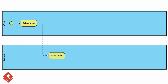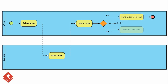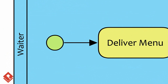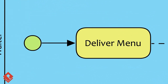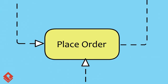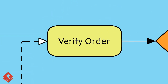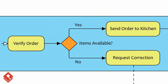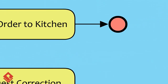Then I can start drawing the workflow. It begins from a start event, followed by the tasks performed by the waiter and customer, with control flow represented by a gateway. Finally, the process ends with an end event.